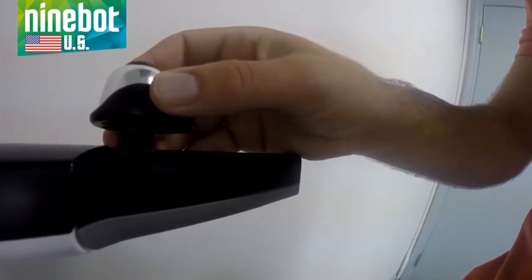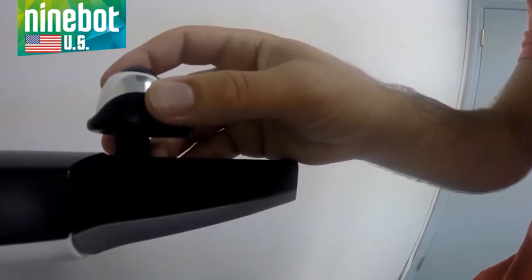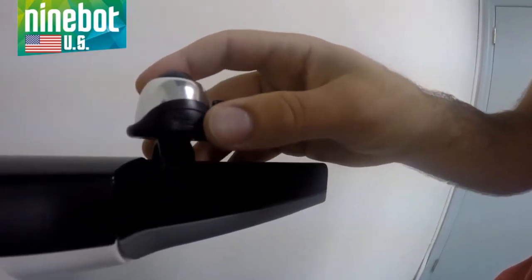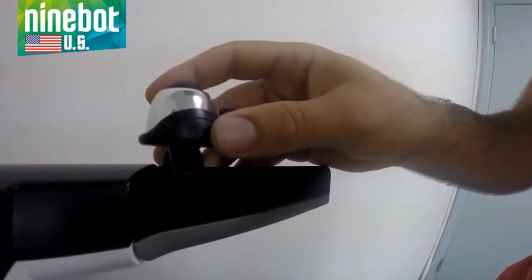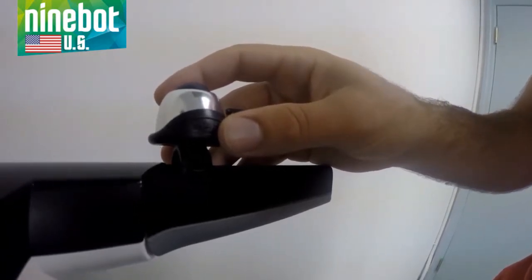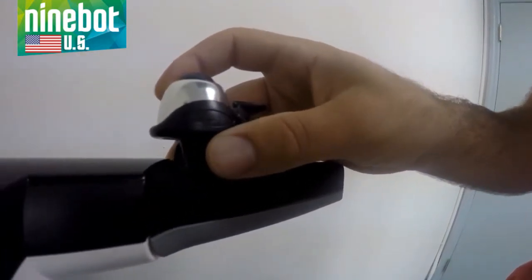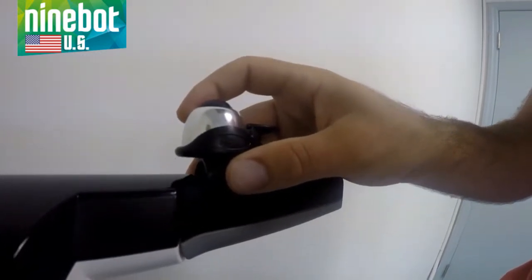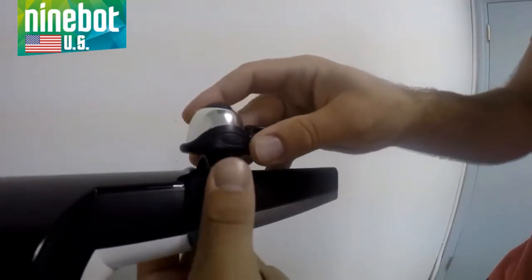Alright, so when you're installing your bell accessory, you have a couple of options in terms of where you want to place it, and it all depends on what's comfortable for you. So we're gonna start off by putting it on the right side of your handlebar. If you're a right-handed person,